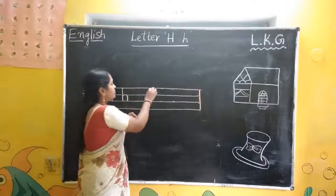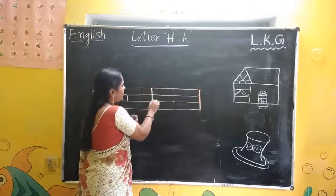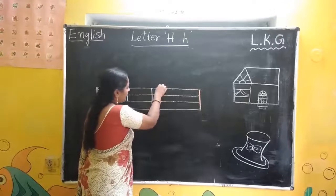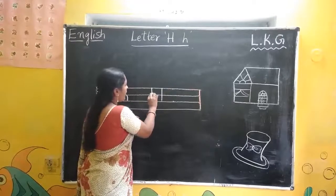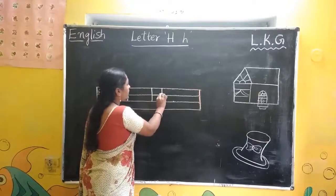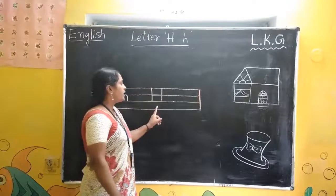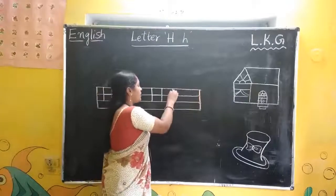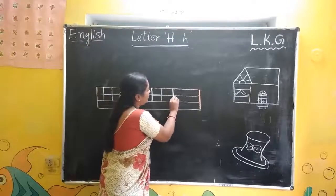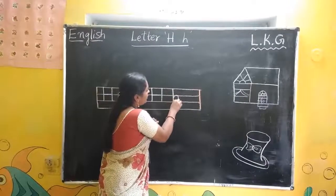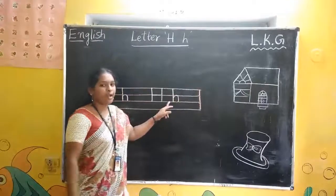Once again, repeat. Standing line. Again standing line. And sleeping line — capital H. Standing line and curve — small H.